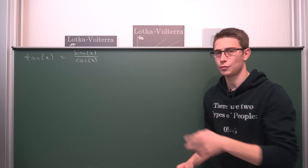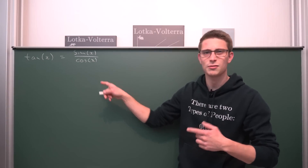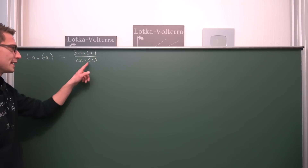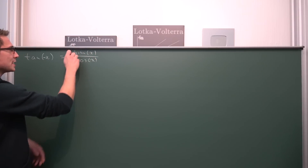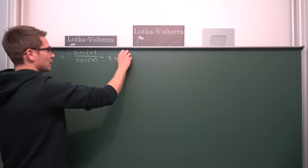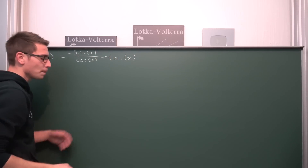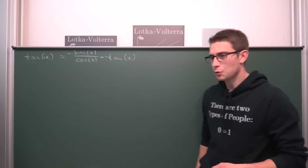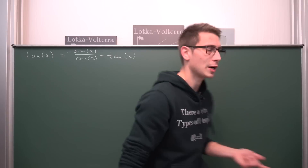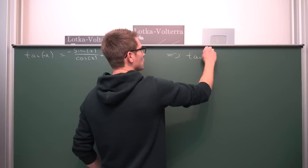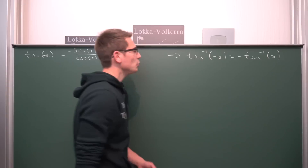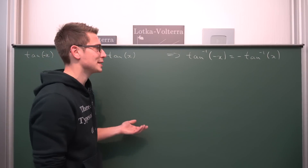The cool thing about the tangent of x is that it's an odd function, meaning if we plug in a negative argument it's going to be equal to negative tangent of x. Why? Plugging a negative argument in gives us sine of negative x over cosine of negative x. Sine is odd, so sine of negative x is negative sine of x. Cosine is even, so cosine of negative x is cosine of x. Overall this gives us negative tangent of x — an odd function. And what I always found rather curious is that the inverse function of the tangent is also an odd function: arctan of negative x equals negative arctan of x.